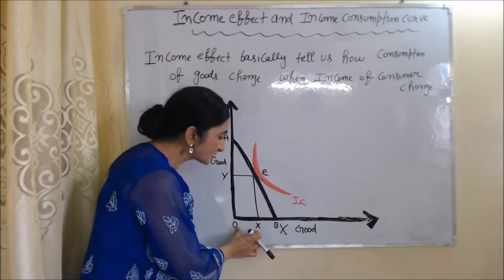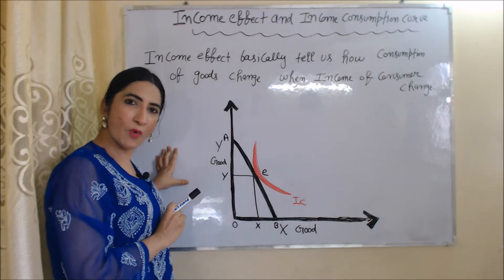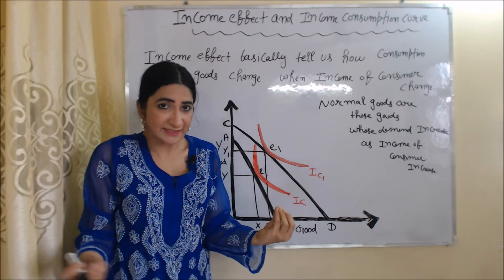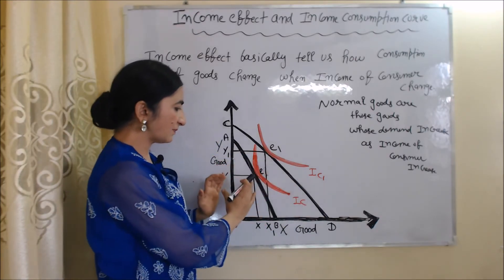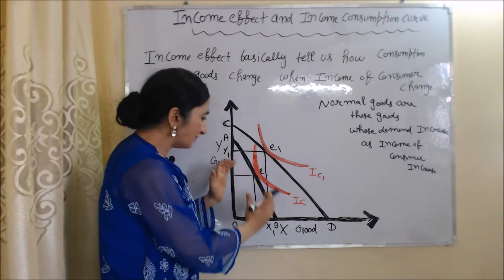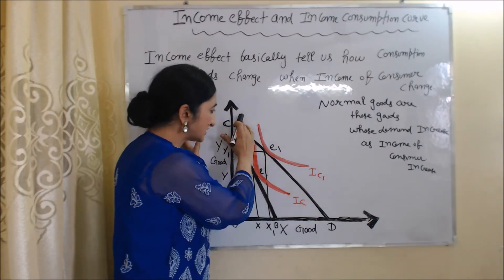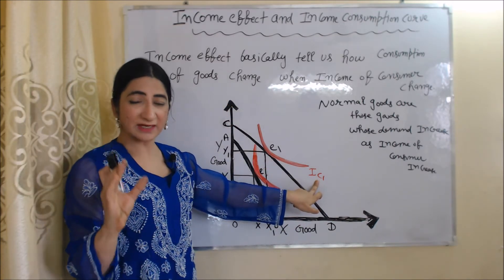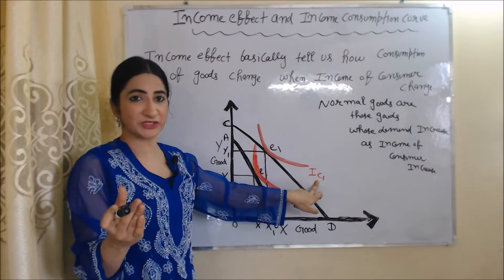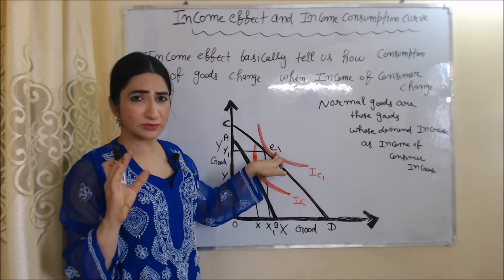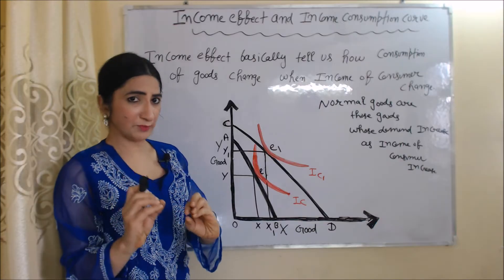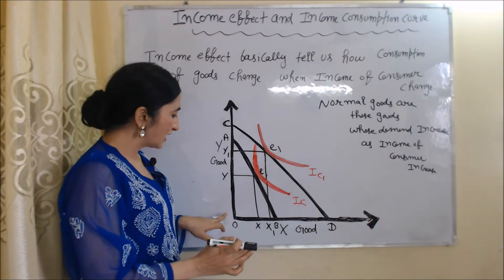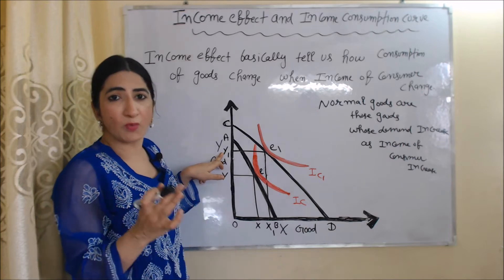At this equilibrium point, the consumer is buying OX quantities of X good and OY quantities of Y good. Now suppose income increases. As income increases, the budget line shifts outward from AB to CD, so CD is our new budget line. IC1 is our new indifference curve, which shows higher satisfaction. E1 is the new consumer equilibrium point, where the consumer is buying OX1 quantities of X good and OY1 quantities of Y good.